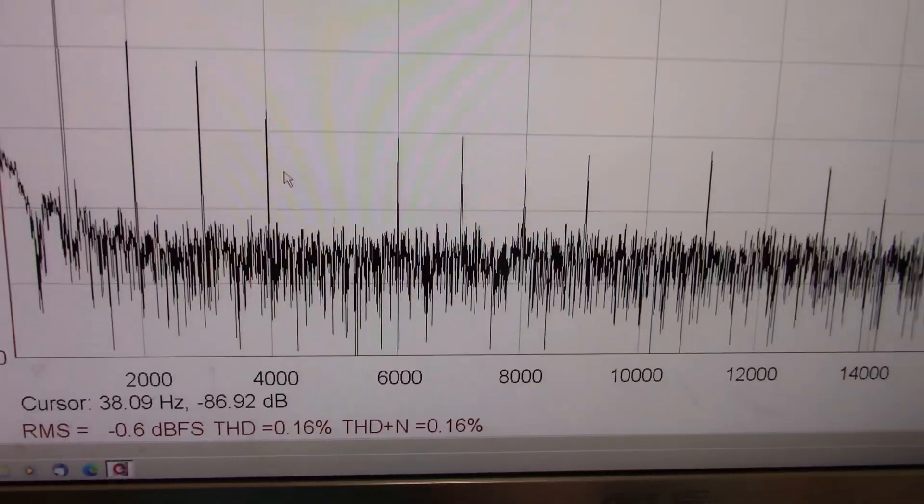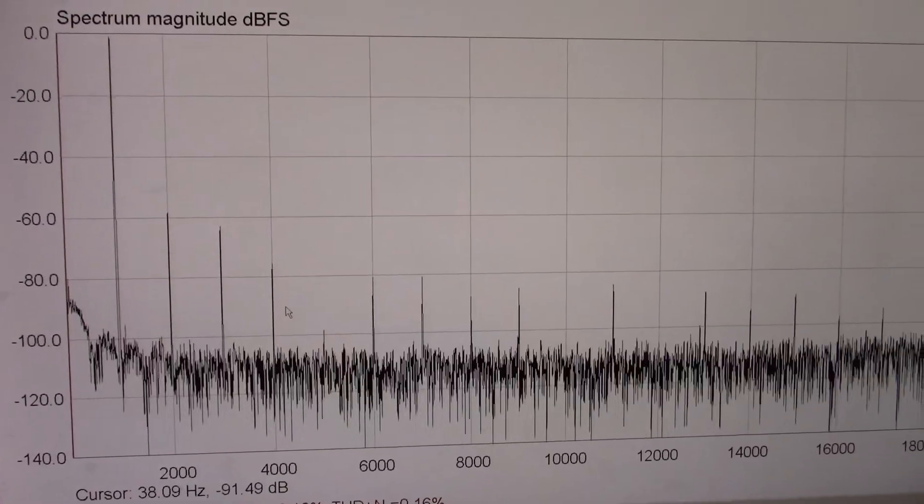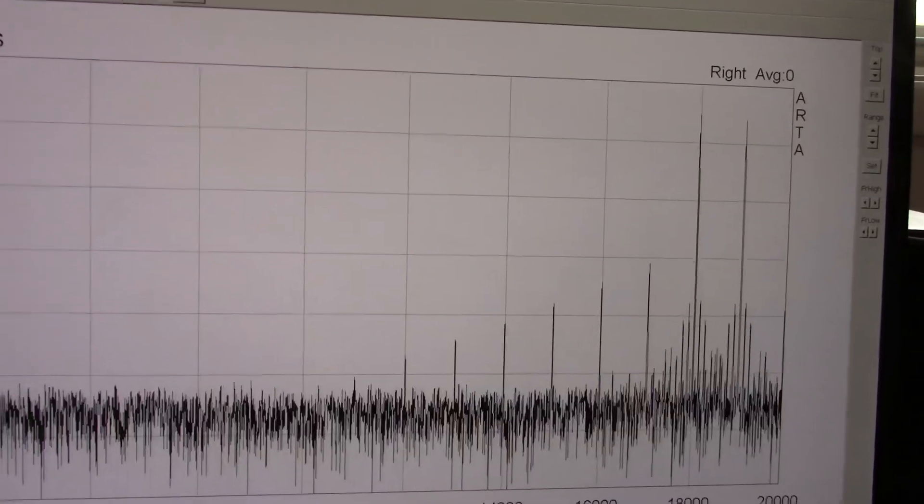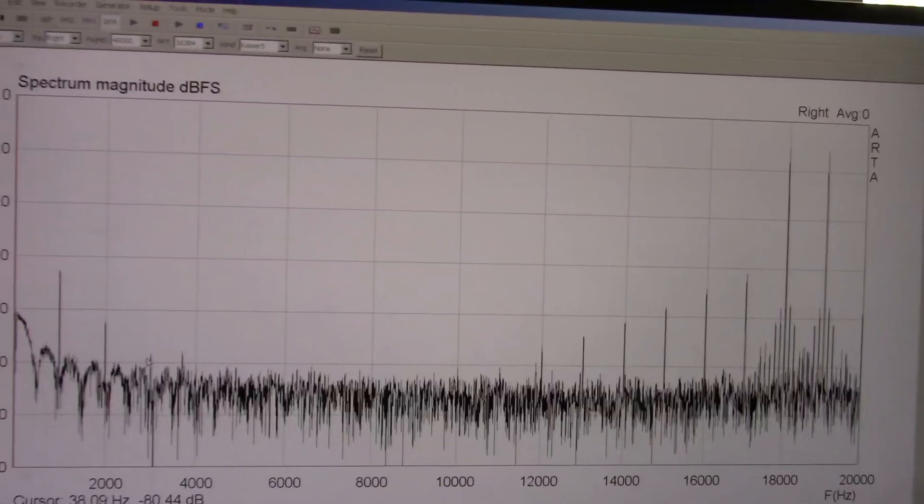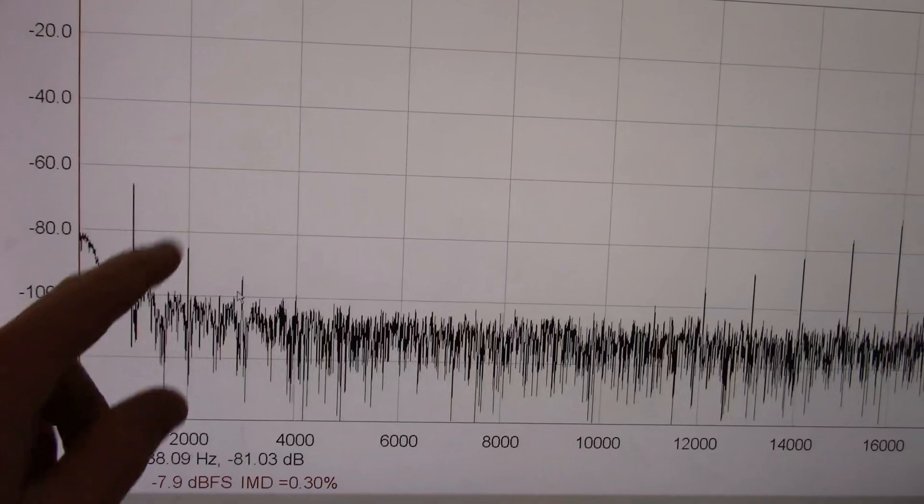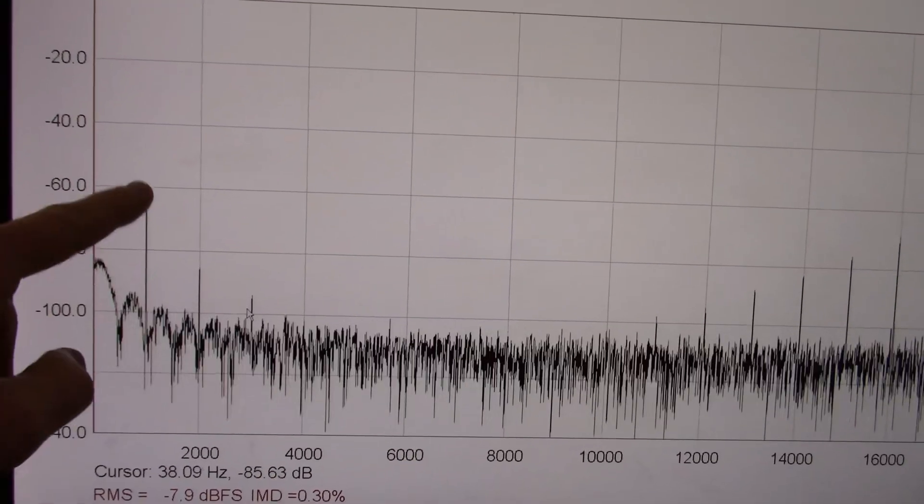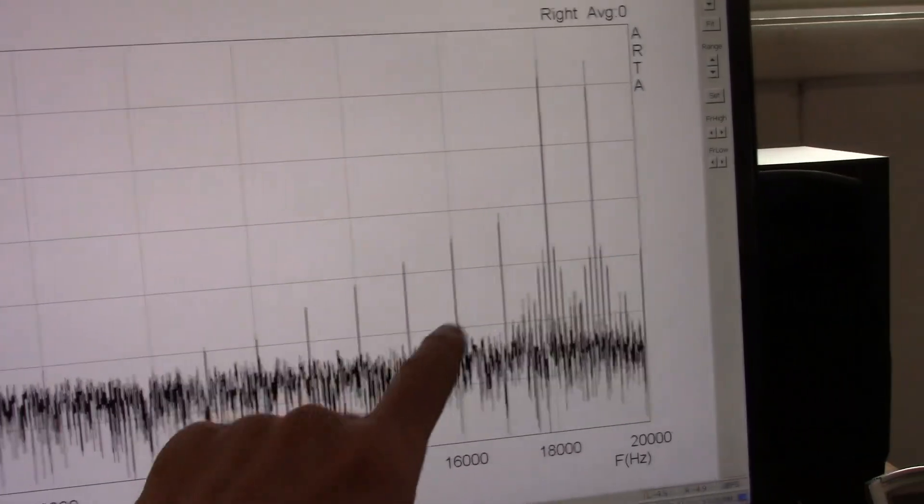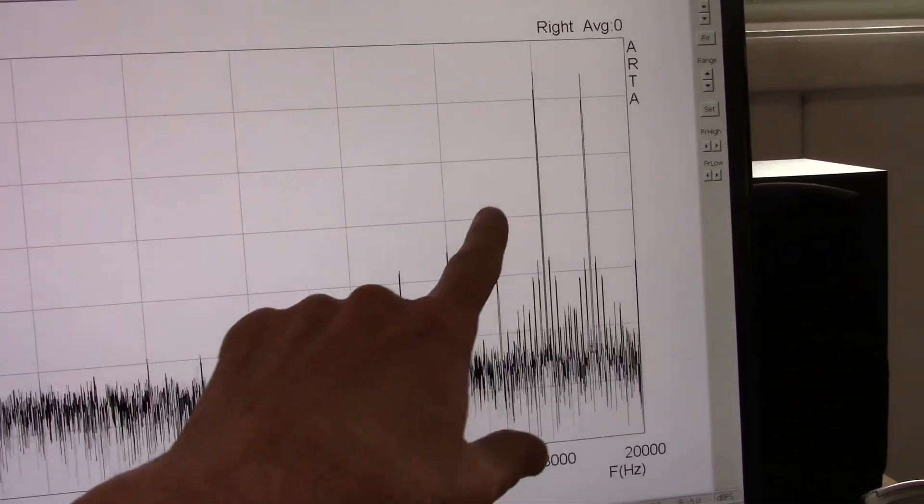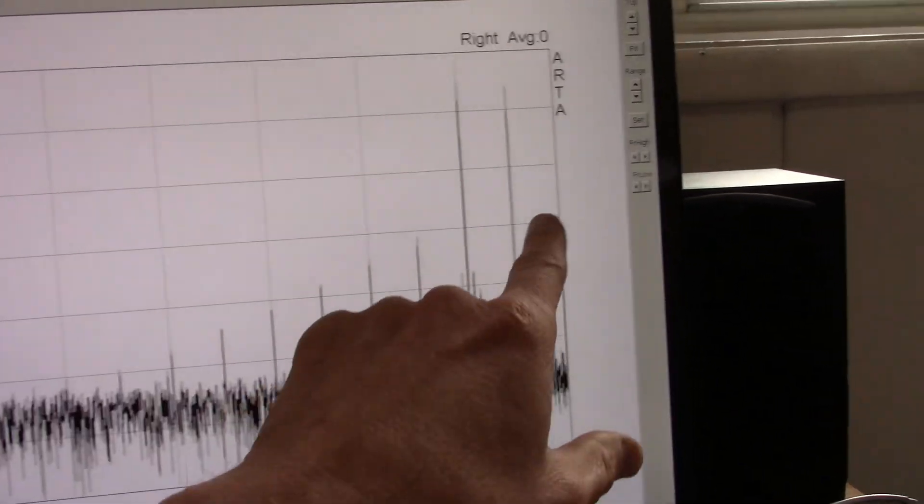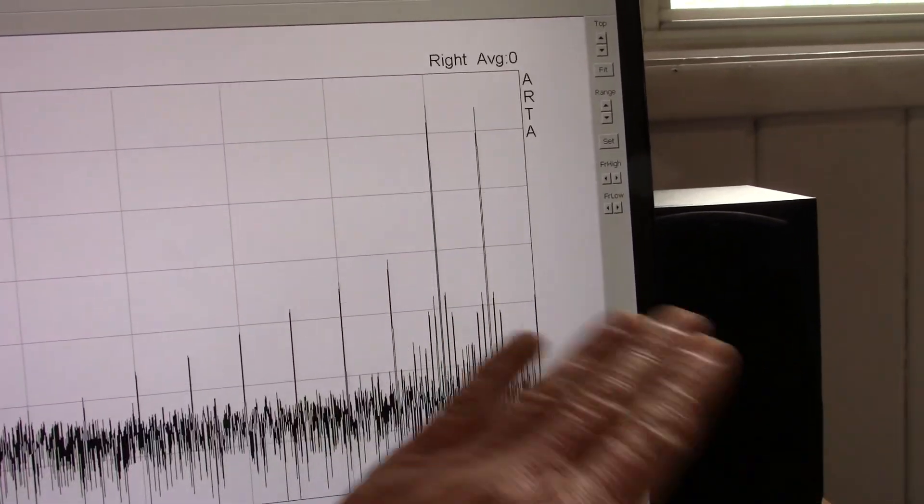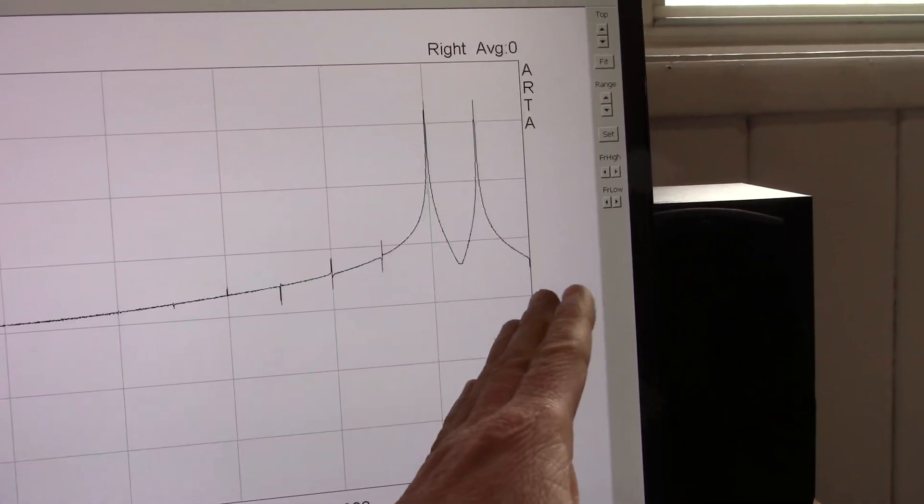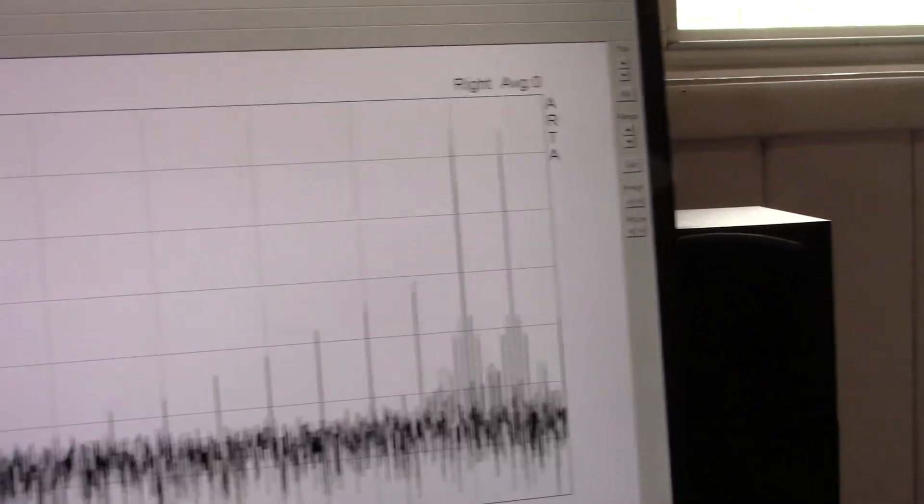Okay, so let's look at the intermodulation distortion. Okay, we got our 18 and 19 kilohertz tones up on the screen there for the intermodulation distortion test. And, yeah, we got a 1 kilohertz node and these sideband tones as well. The upper sideband tones are calculated for as well.